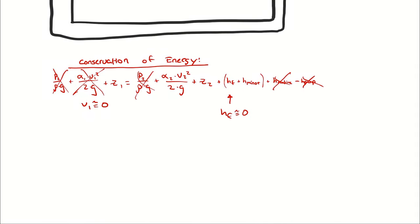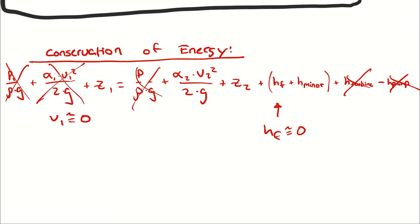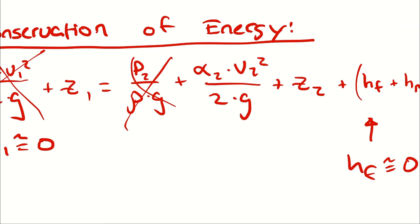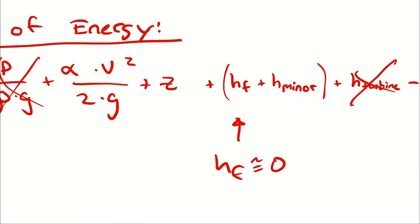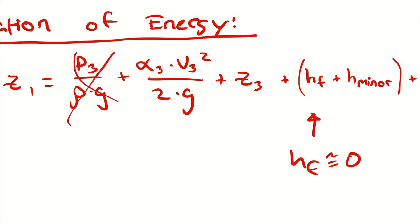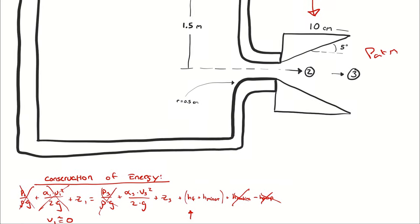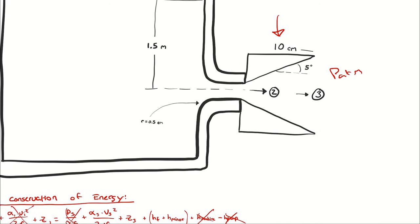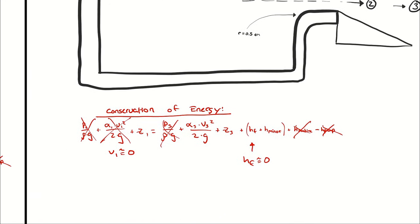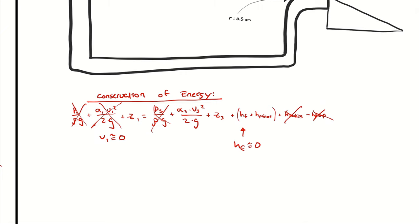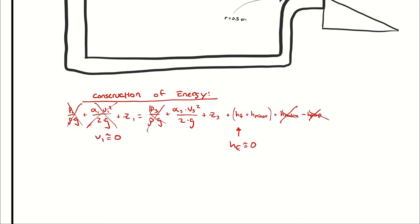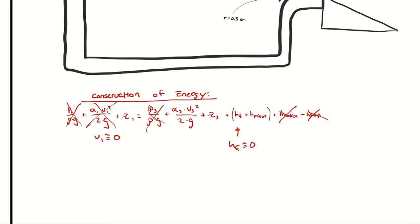Just like in the previous problem, I am assuming atmospheric pressure on either end. Since I am now analyzing from state 1 to state 3, I will change all the 2's to 3's. Z1 minus Z3 is still the 1.5 meters from the previous problem, because there is a horizontal relationship between states 2 and 3. The velocity at state 3 is what we calculate, and with the wider diameter of the cheater pipe, we can figure out the volumetric flow rate or use it to find the velocity at state 2.